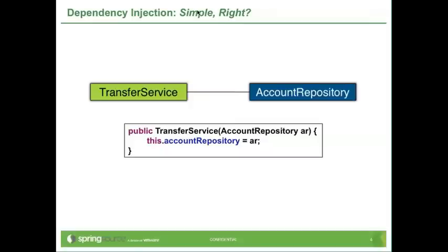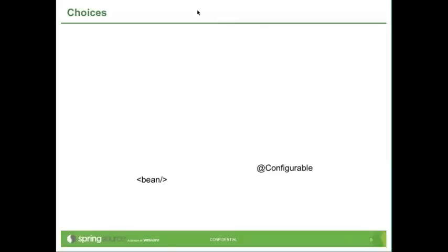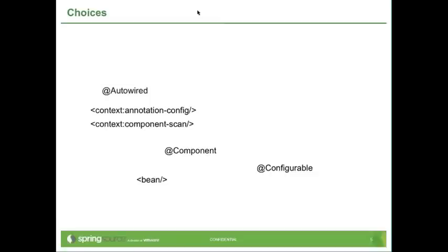So if it's so simple, then why are there so many choices? Why are there so many ways to do it? Today in Spring, and from day one in Spring, we've had the beans namespace — bean declarations in XML — @Configurable for domain object dependency injection. We have context annotation config and component scanning that came along in Spring 2.5, along with @Autowired. @Inject is a new player on the scene, part of JSR 330. @Configuration classes and @Bean methods are new in Spring 3. This is just a partial list of all the choices, all the different mechanisms that help you get dependency injection done.